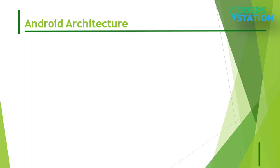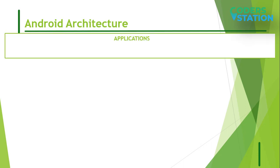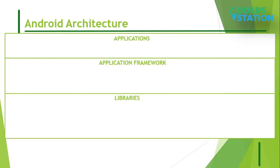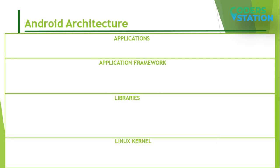Android operating system is a stack of software components which is roughly divided into five sections which are Applications, Application Framework, Libraries, and Linux Controls. Let's study each layer in detail.